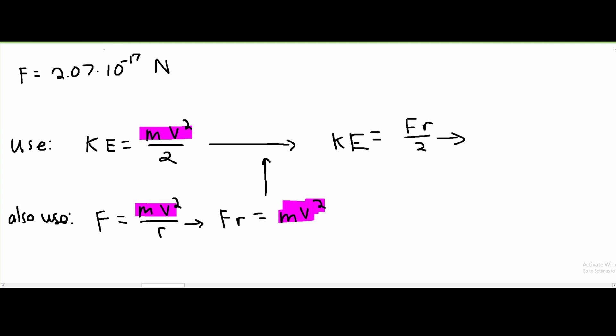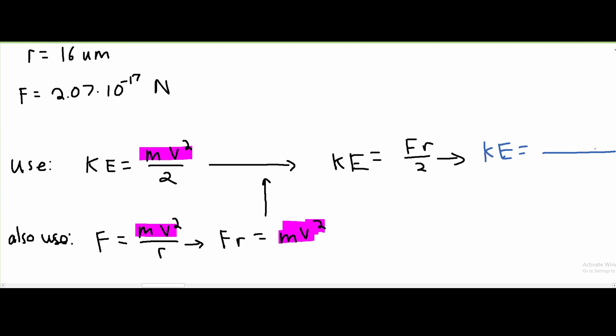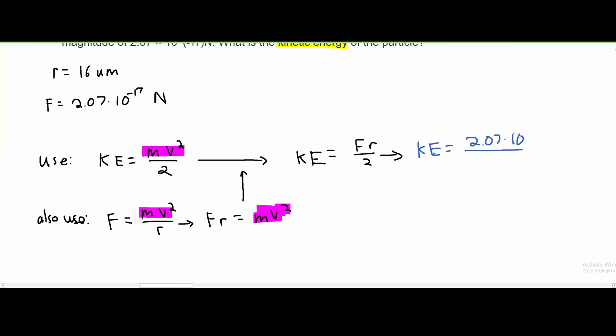And we are given all of this, so now we can go ahead and solve. Our kinetic energy is going to be our force, which is 2.07 times 10 to the negative 17 newtons, multiplied by the radius, which is 16.